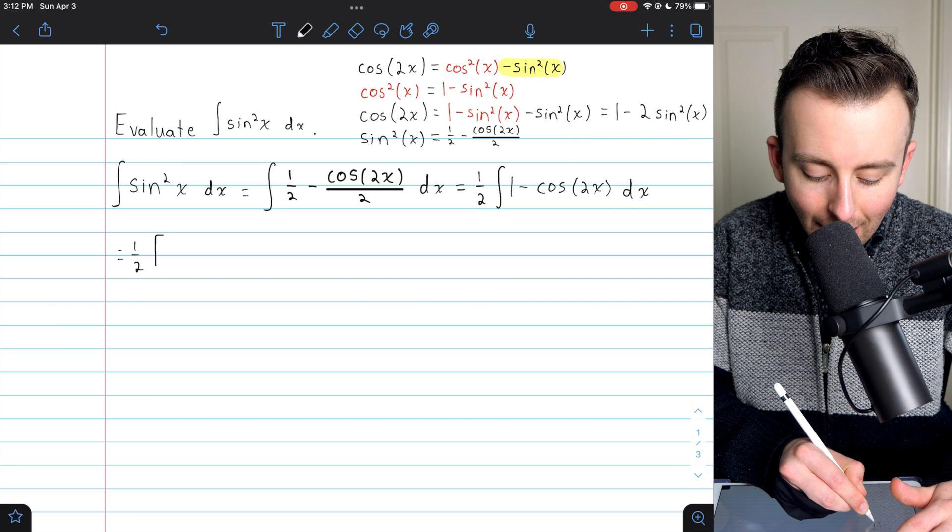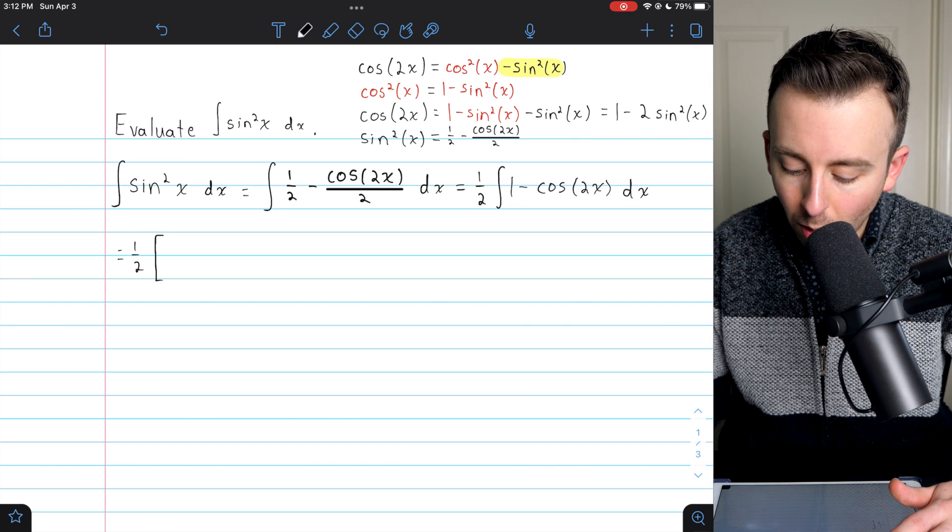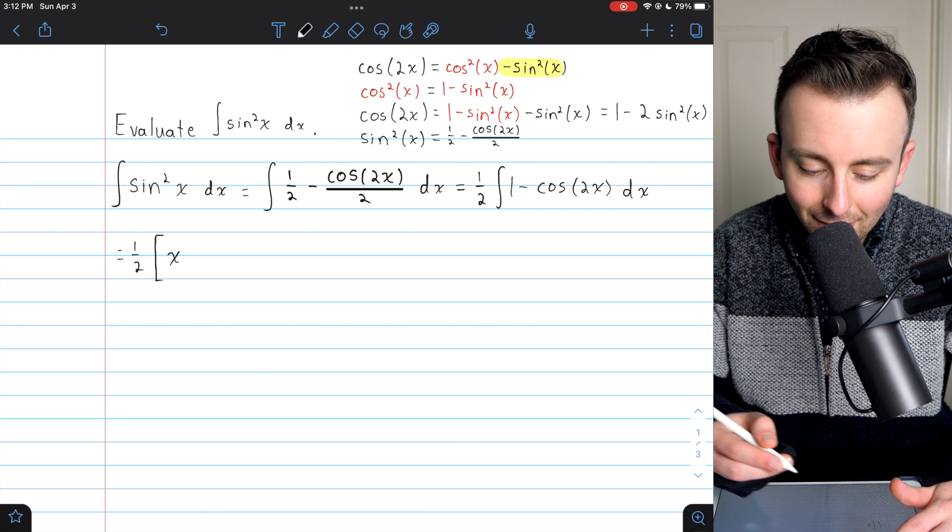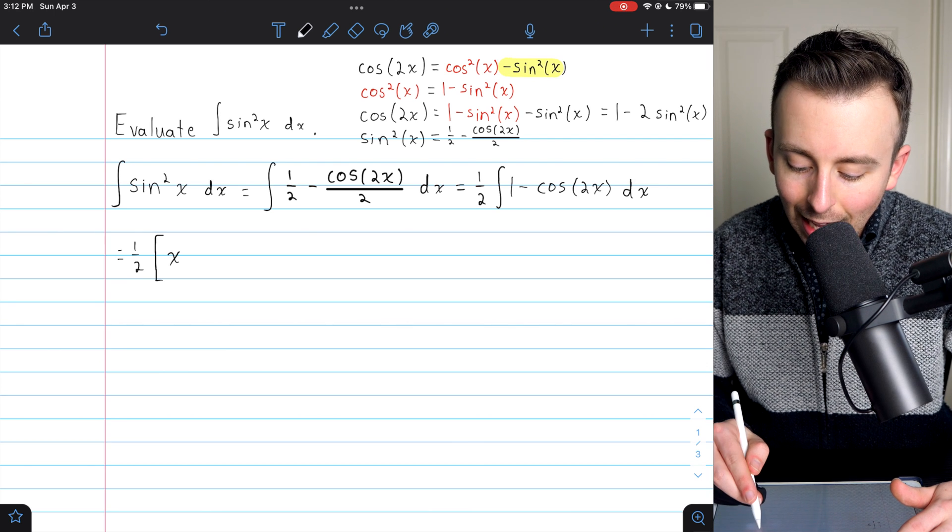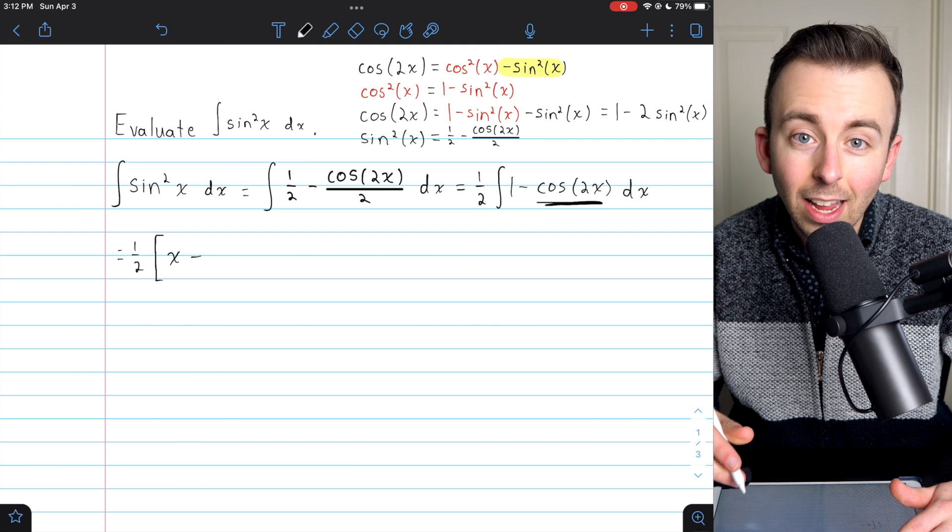Let's make sure we get that factor of one half and do the integration. What's the integral of one? That's just power rule. That's going to give us x. And then minus the integral of cosine of 2x. And what's that?